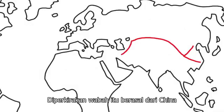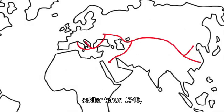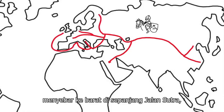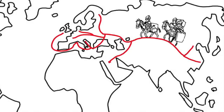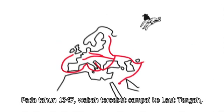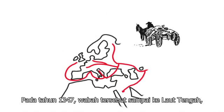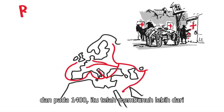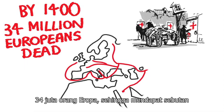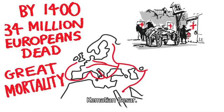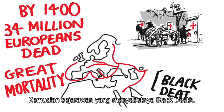It is thought the plague originated in China in around 1340, spreading west along the Silk Road, the caravan route running from Mongolia to the Crimea. In 1347, the plague reached the Mediterranean, and by 1400, it had killed in excess of 34 million Europeans, earning it the title the Great Mortality. It was later historians who called it the Black Death.